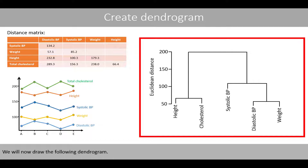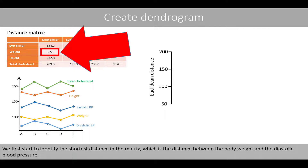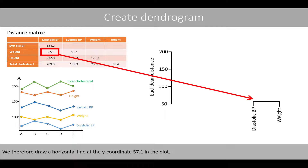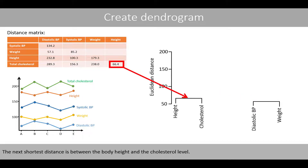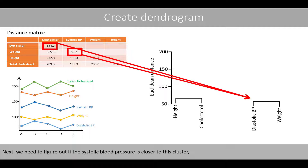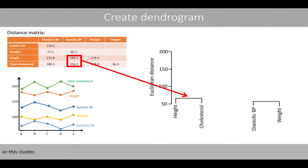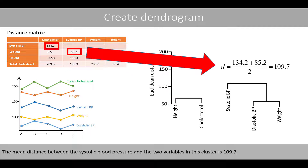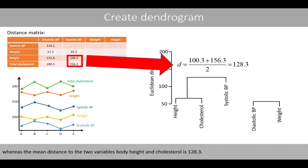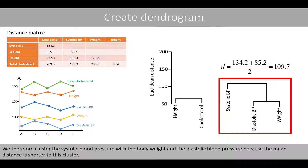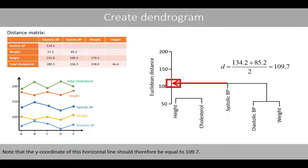We'll now draw the following dendrogram. We first start by identifying the shortest distance in the matrix, which is the distance between the body weight and the diastolic blood pressure. We therefore draw a horizontal line at the y-coordinate 57.1 in the plot. The next shortest distance is between the body height and the cholesterol level. Next, we need to figure out if the systolic blood pressure is closer to this cluster or the other cluster. The mean distance between the systolic blood pressure and the two variables in this cluster is 109.7, whereas the mean distance to the variables body height and cholesterol is 128.3. We therefore cluster the systolic blood pressure with the body weight and the diastolic blood pressure, and the y-coordinate of this horizontal line is 109.7.